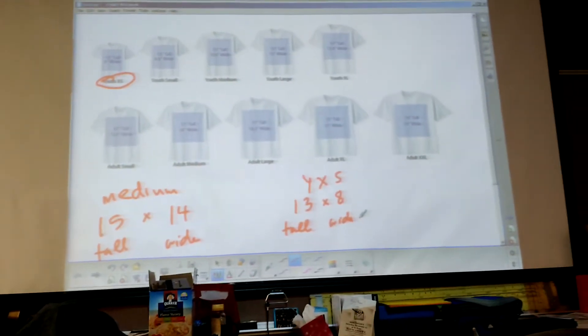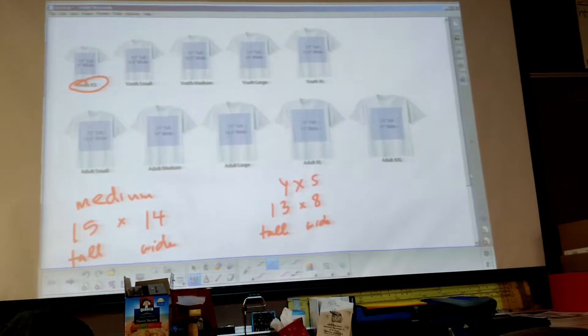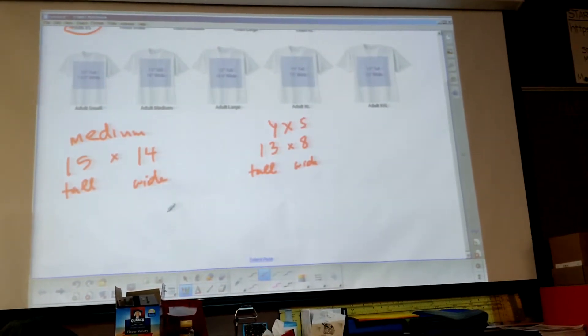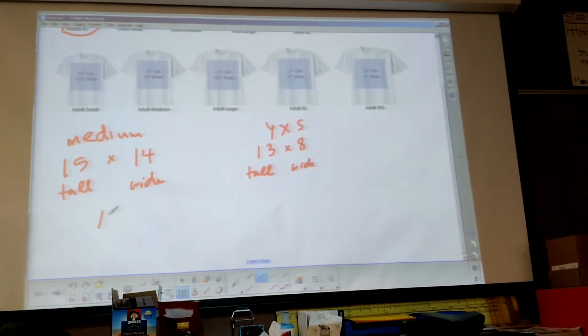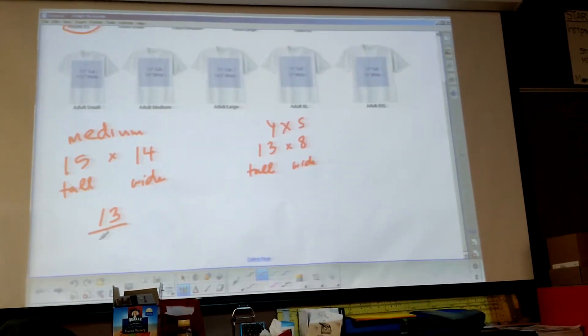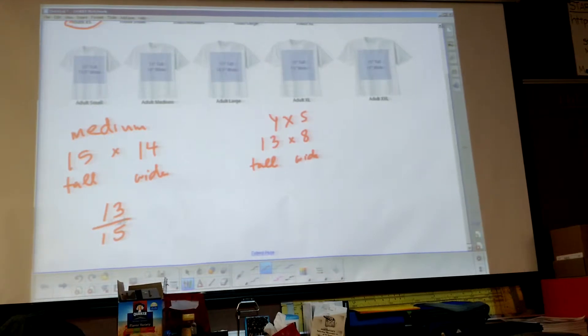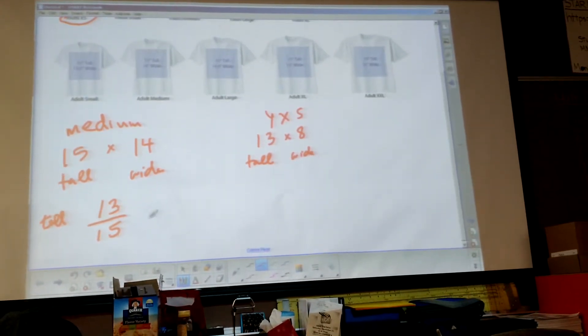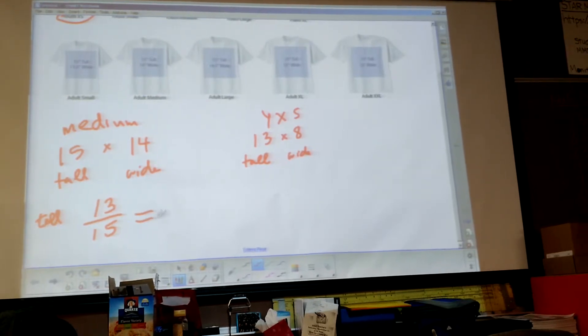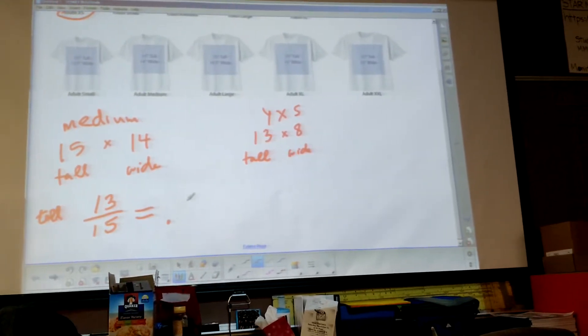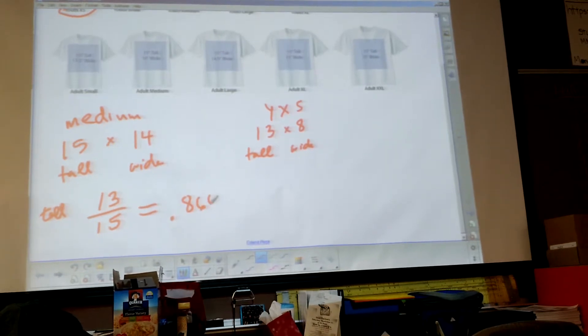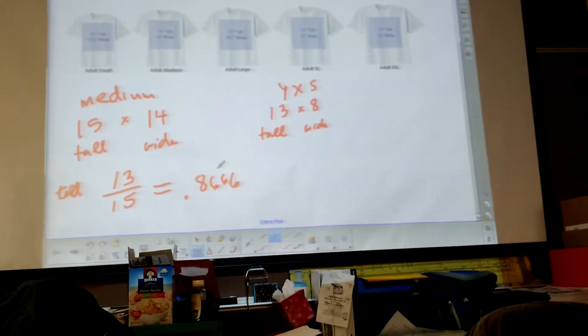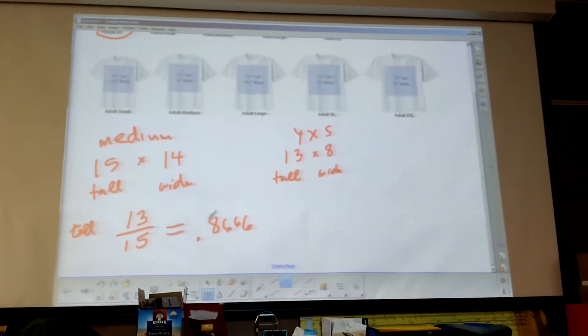To make these scale factors you're just going to make proportions. A proportion is just a fraction. We're going to match up our talls, do the smaller one over the larger one, and then divide that. When you divide 13 by 15 that's .866 repeating. For your purposes you can probably just do .8666.